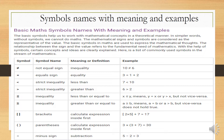Here is a list of commonly used symbols. The columns are: symbol, symbol name, meaning or definition, and example. The first symbol is the not-equal sign — meaning: inequality. Example: 10 is not equal to 6.